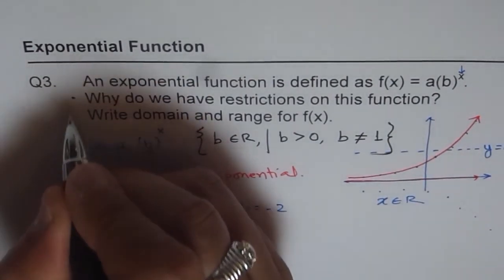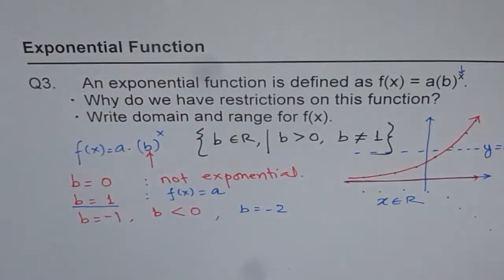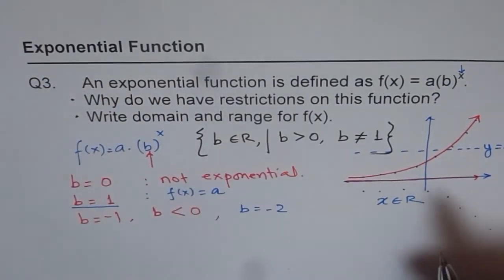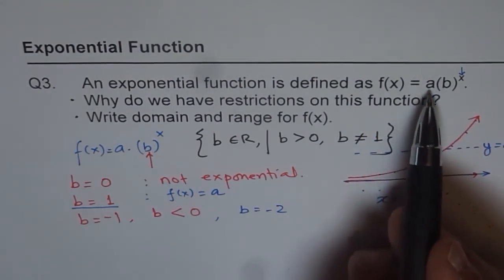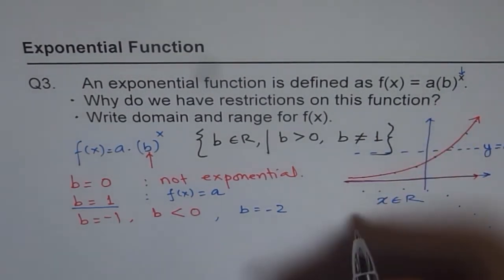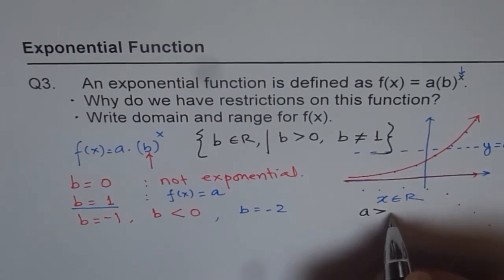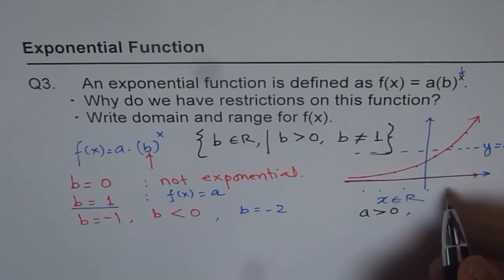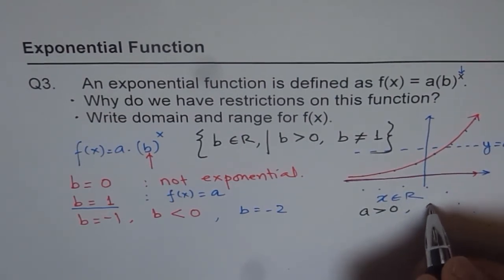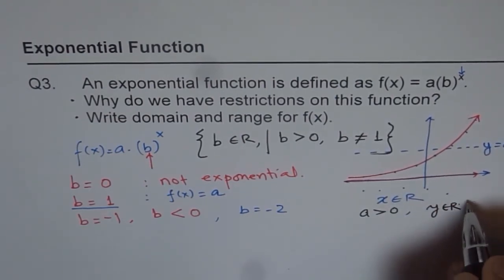So we have answered the first question. Now let's move on to the second part, which is domain and range. As you can see from here, depending on the value of a, so we are assuming that a is positive. Let's assume that a is greater than 0. We are assuming that a is positive. In that case, the range is y belongs to real numbers such that y is greater than 0.